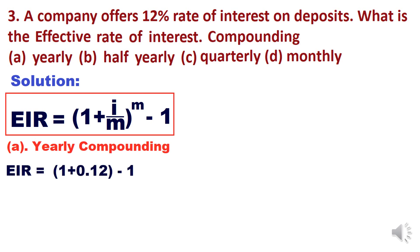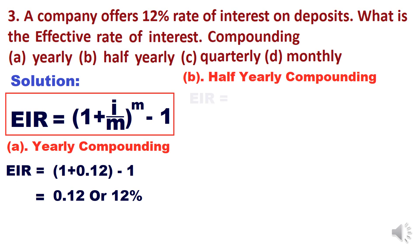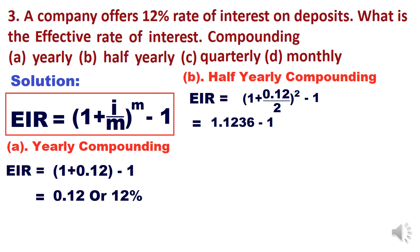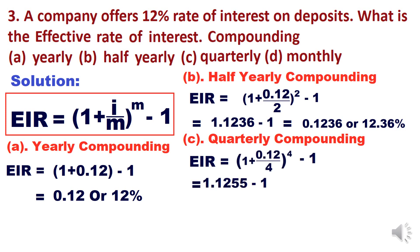For annual compounding: EIR = (1 + 0.12)^1 − 1 = 0.12 or 12% — the effective rate equals the nominal rate. For half-yearly compounding: EIR = (1 + 0.12/2)^2 − 1 = 0.1236 or 12.36%. Notice the effective rate has increased compared to annual compounding — this is very important to understand.